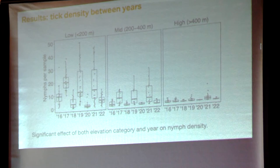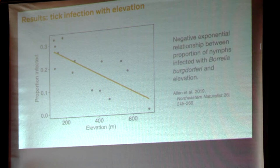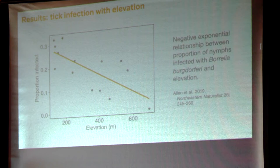We also find differences in tick infection rates. Generally about 20% of nymphs are infected with the Lyme agent. Not only do low-elevation sites have more ticks, but a larger fraction of those ticks are infected — 20 to 30 percent at low-elevation sites.